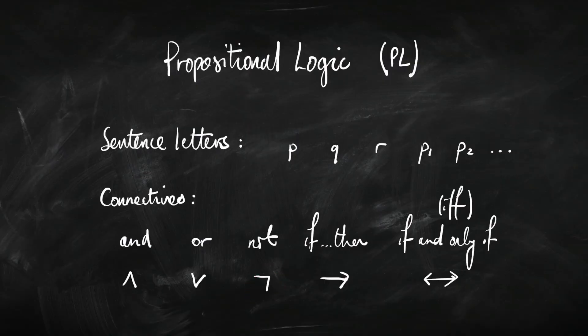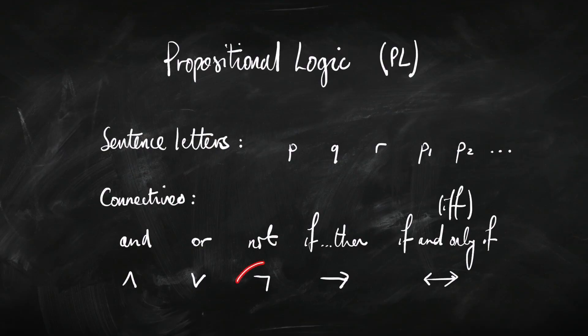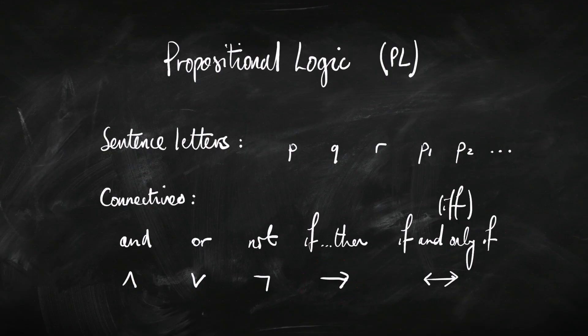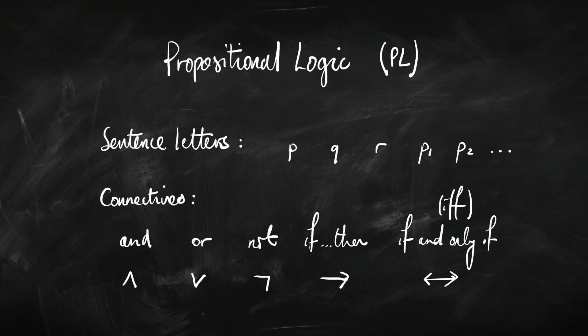For 'not', the symbol is a bit like a crossing-out symbol — a 'not' is like crossing something out and saying 'not that'. For 'if-then', it's an arrow because the arrow leads you from the antecedent — the 'if' bit — to the consequent — the 'then' bit. For 'if and only if', it's a two-way arrow because it's like an inference going this way and back the other way as well. So that's why that one is a two-way arrow — you basically just have to learn those symbols.